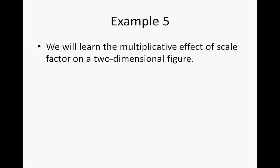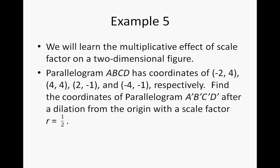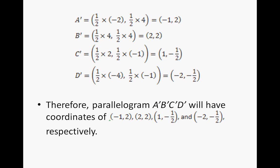Example 5: the multiplicative effect of scale factor on a two-dimensional figure. Parallelogram ABCD has coordinates A=(-2, 4), B=(4, 4), C=(2, -1), and D=(-4, -1) respectively. Find the coordinates of parallelogram A'B'C'D' after a dilation from the origin with a scale factor of 1/2. Since the scale factor is 1/2, this is a reduction, so all coordinates should be closer to the origin. Multiplying each coordinate by 1/2 gives A'=(-1, 2), B'=(2, 2), C'=(1, -1/2), and D'=(-2, -1/2). Now go ahead and do exercises 6 through 8, then continue the video to check your answers.